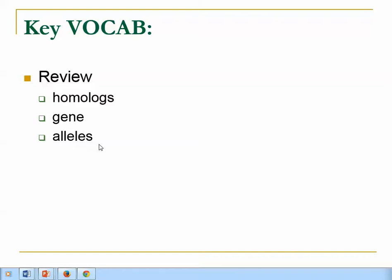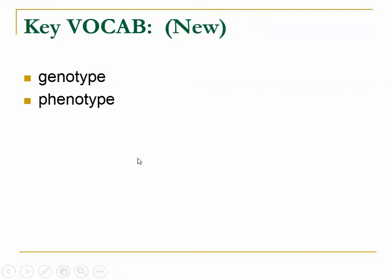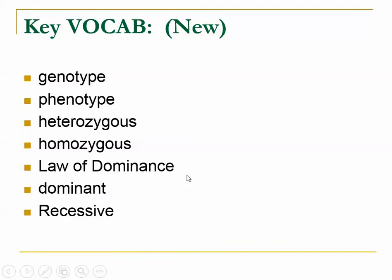We're going to be looking at these vocabulary pairs: genotype and phenotype, heterozygous and homozygous, and the law of dominance and dominant/recessive.